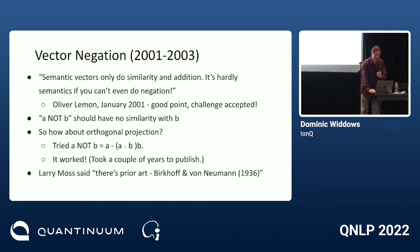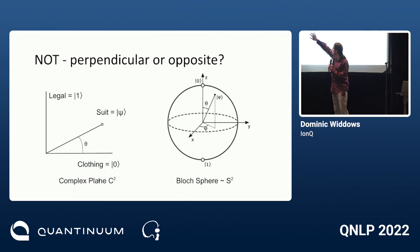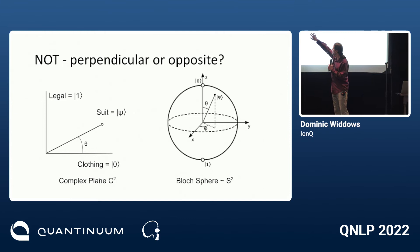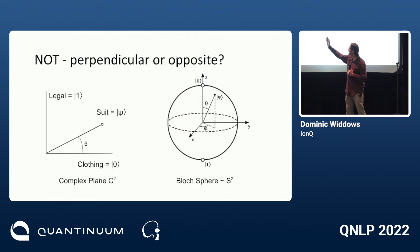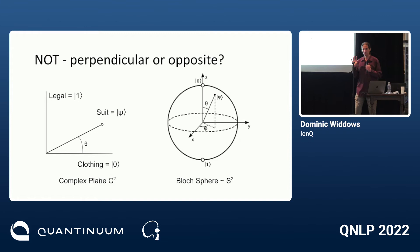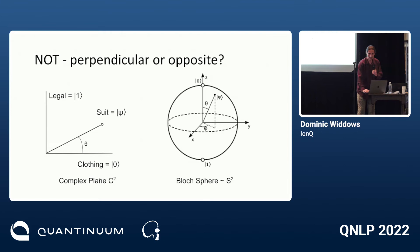An interesting question: by negation, do we mean things that are perpendicular or things that are opposite? It could be both. If I project a 'suit' vector and want 'suit not lawsuit' — not the legal meaning — I project it down onto the clothing axis. We use both pictures in quantum mechanics: orthogonal vectors represented as antipodal points on the Bloch sphere.